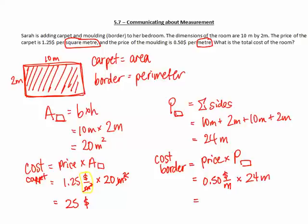So $0.50 per meter times 24. $0.50 times 24 is 12. Something over, dollars over meters times meters, the meters will cancel out, and I am left with dollars.